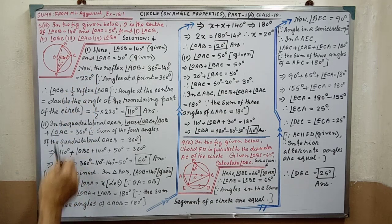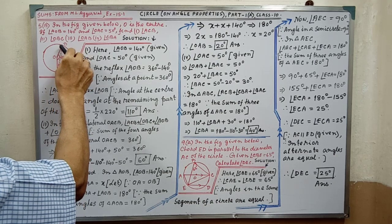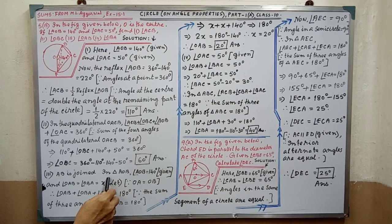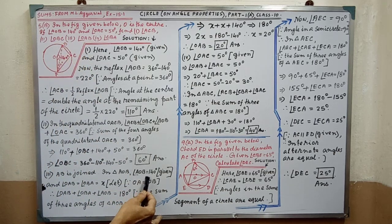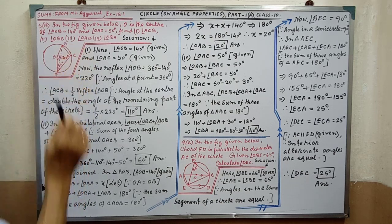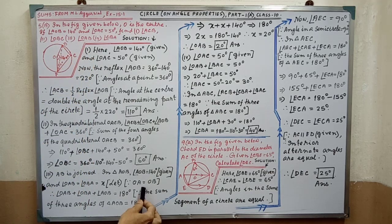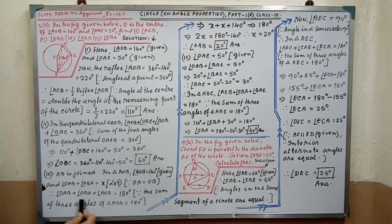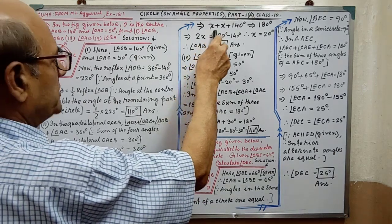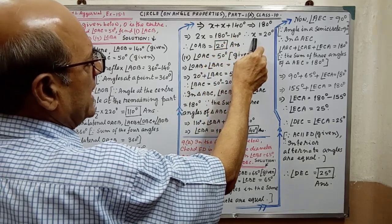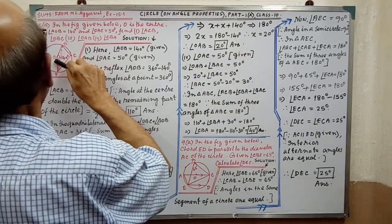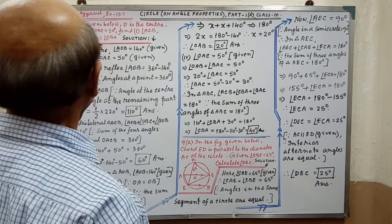Next part: angle OAB. AB is joined — this is not joined in the diagram, so in the answer you have to join AB. Then in triangle AOB, angle AOB equal to 140 degree given. Angles OAB and OBA are equal because this is an isosceles triangle — OA equal to OB, that is radii of the same circle. Let this be X. Adding these three angles of the triangle equal to 180 degree. After putting and simplifying, we are getting X equal to 20. That means angle OAB is 20 degree. Third part is completed.